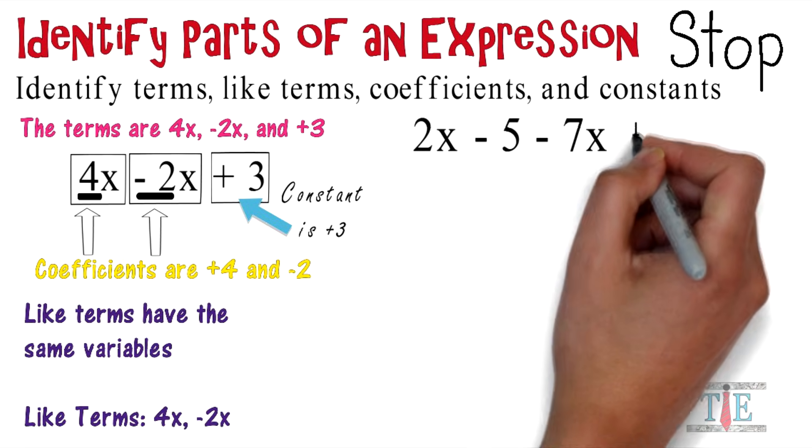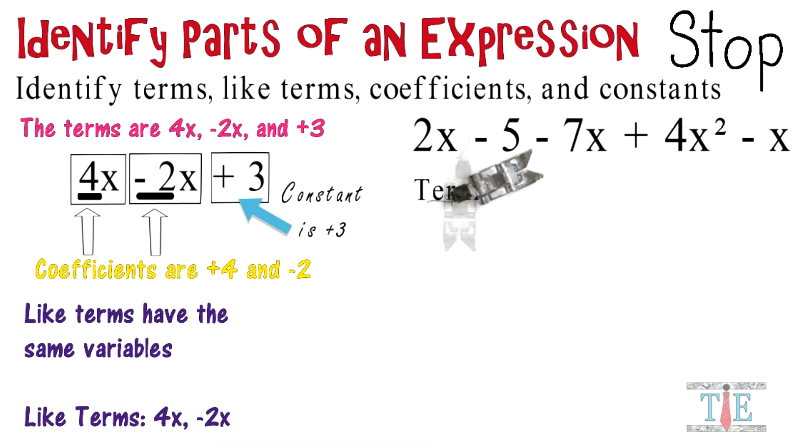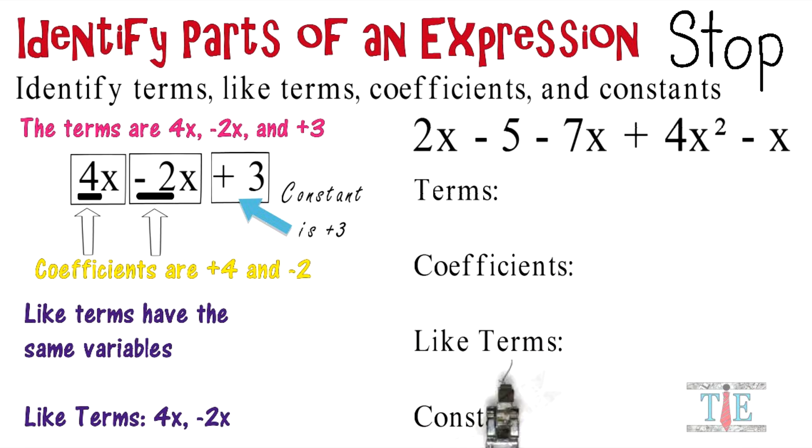So here's one for you to try on your own. 2x minus 5 minus 7x plus 4x squared minus x. And I'd like for you to identify the terms, coefficients, like terms, and constants.